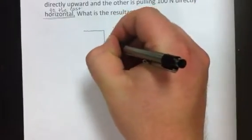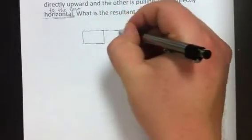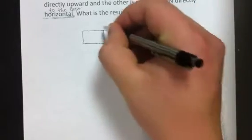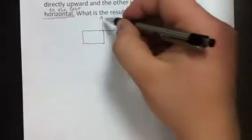Okay, so first of all, let's draw a picture to try to get an idea of what we're dealing with here. We have a box, and we've got one force pulling directly east with 100 N, and we have another force pulling directly upward with 50 N.